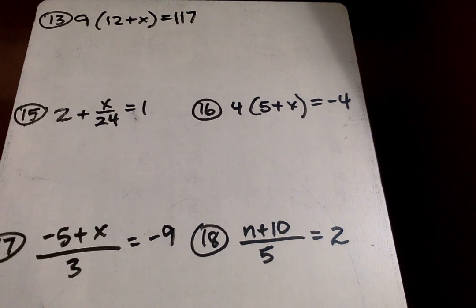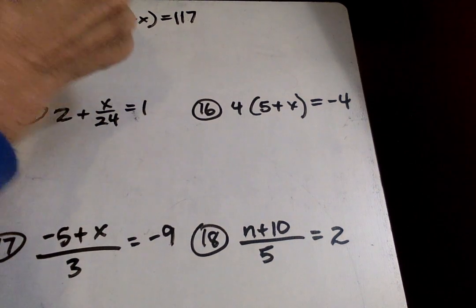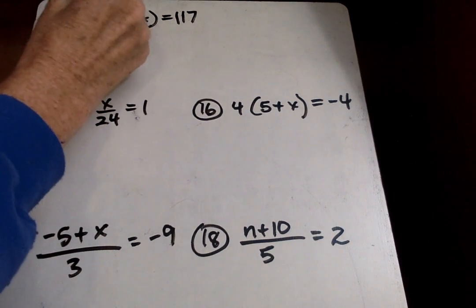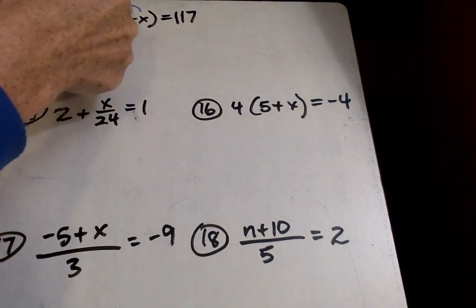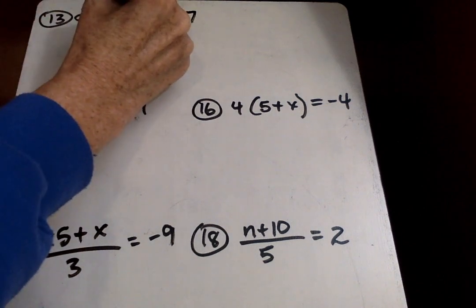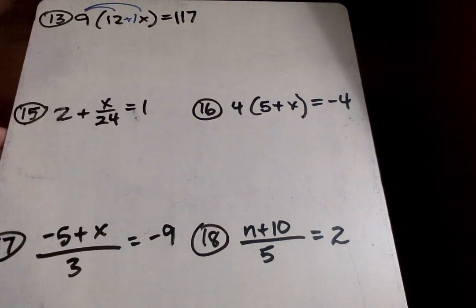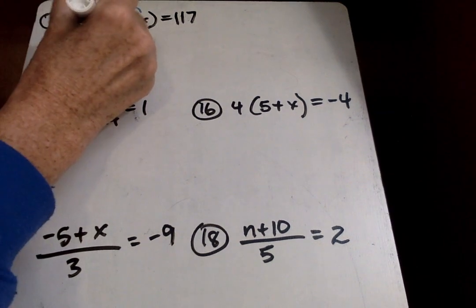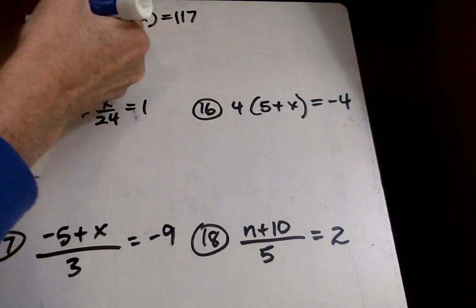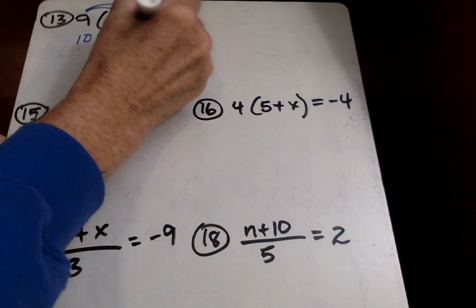we have to use the distributive property. We have parentheses up here. So we're going to go 9 times 12 and 9 times X. Remember, if nothing is in front of X, it's a 1X. So if you would like to change that, we can change it like that. So 9 times 12 is 108, plus 1 times 9 is 9, with the X.